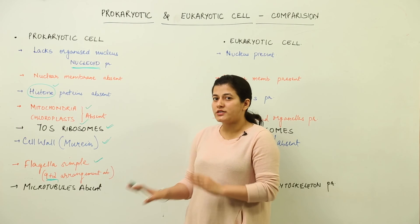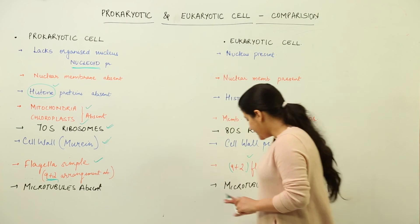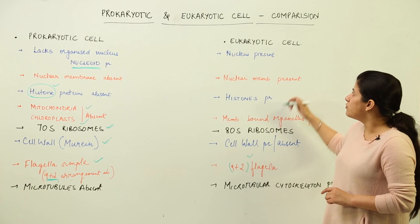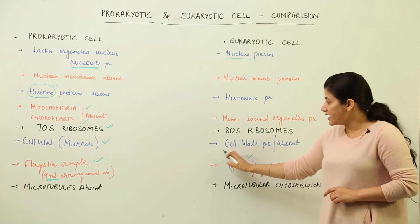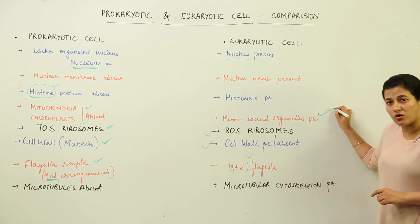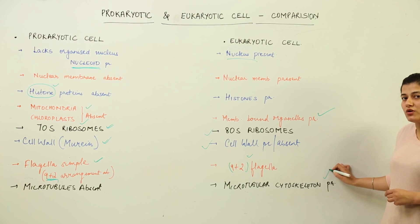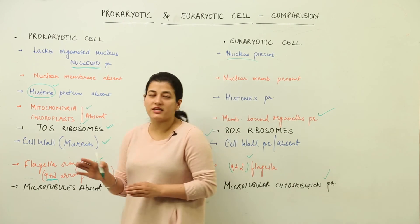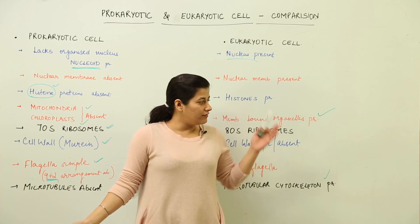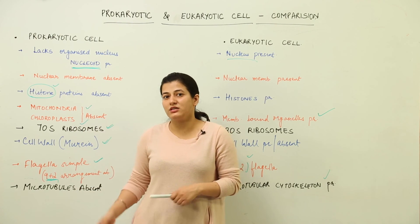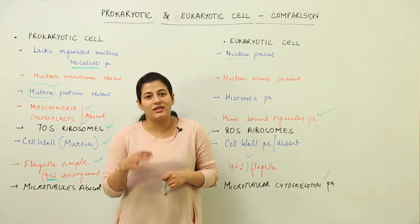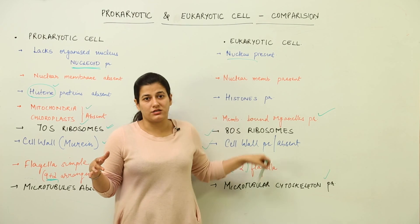Lastly, prokaryotic cells do not have a microtubular cytoskeleton, whereas eukaryotic cells do have microtubules and a cytoskeletal structure. To summarize, the most important points of comparison are: nucleus, cell wall, ribosome composition, membrane-bound organelles, and cytoskeleton. The easiest way to learn is that eukaryotic cells have these features, and wherever you have difficulty, remember that prokaryotic cells are generally not going to have those particular characteristics.